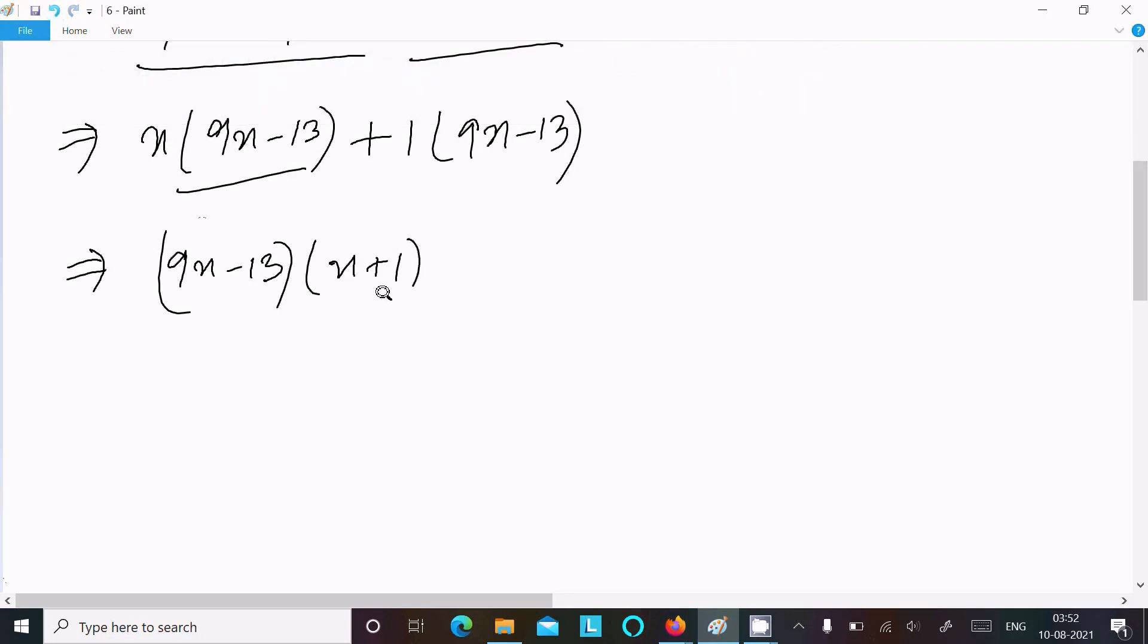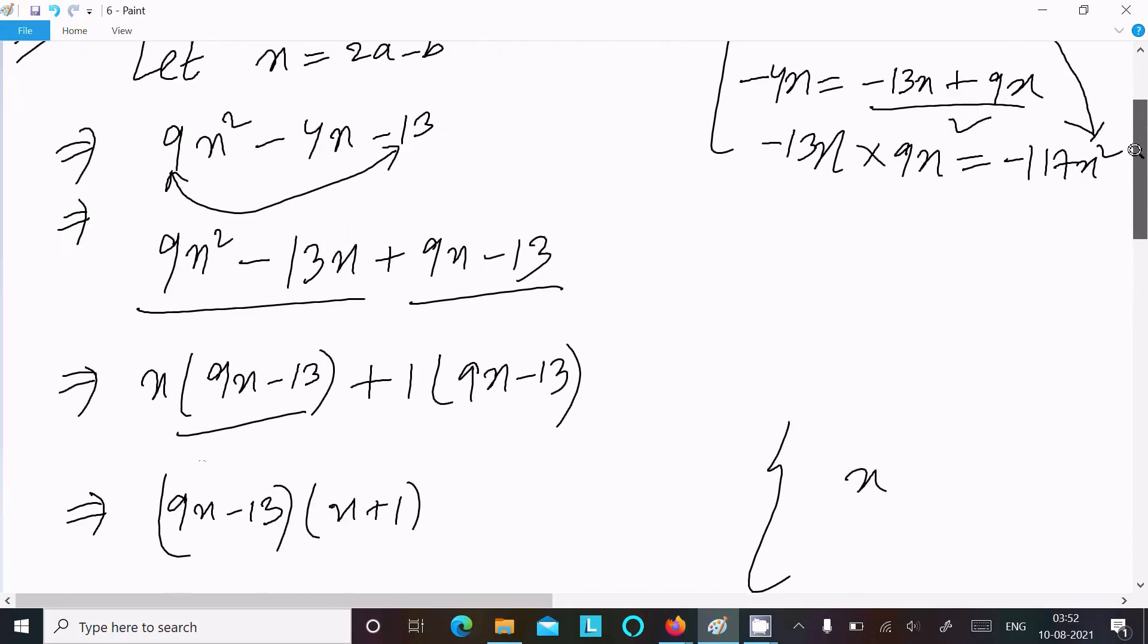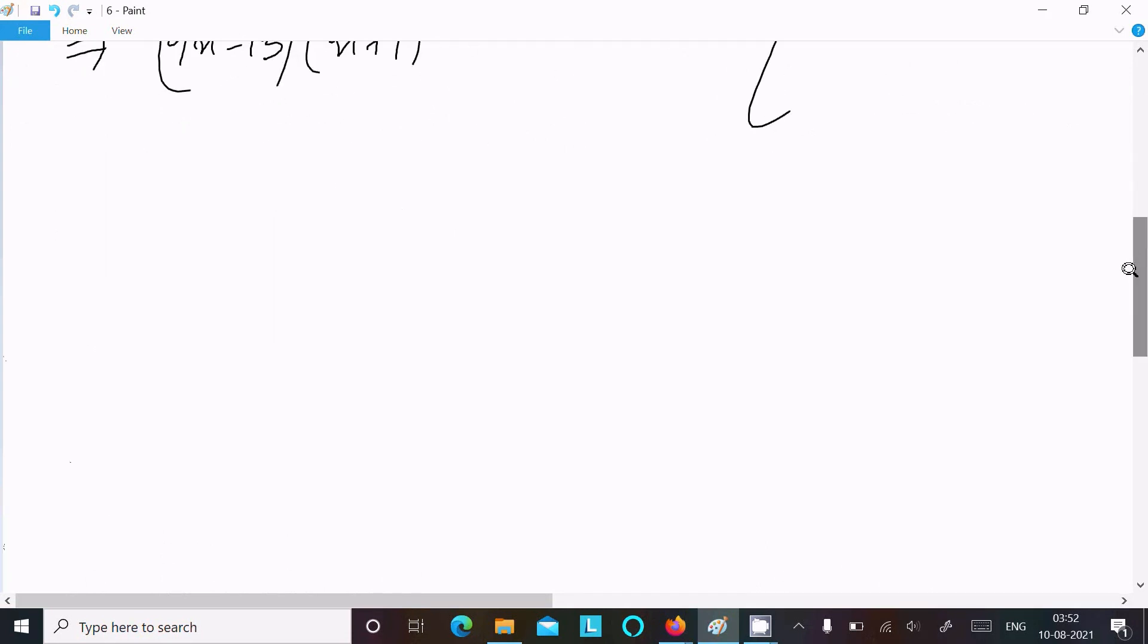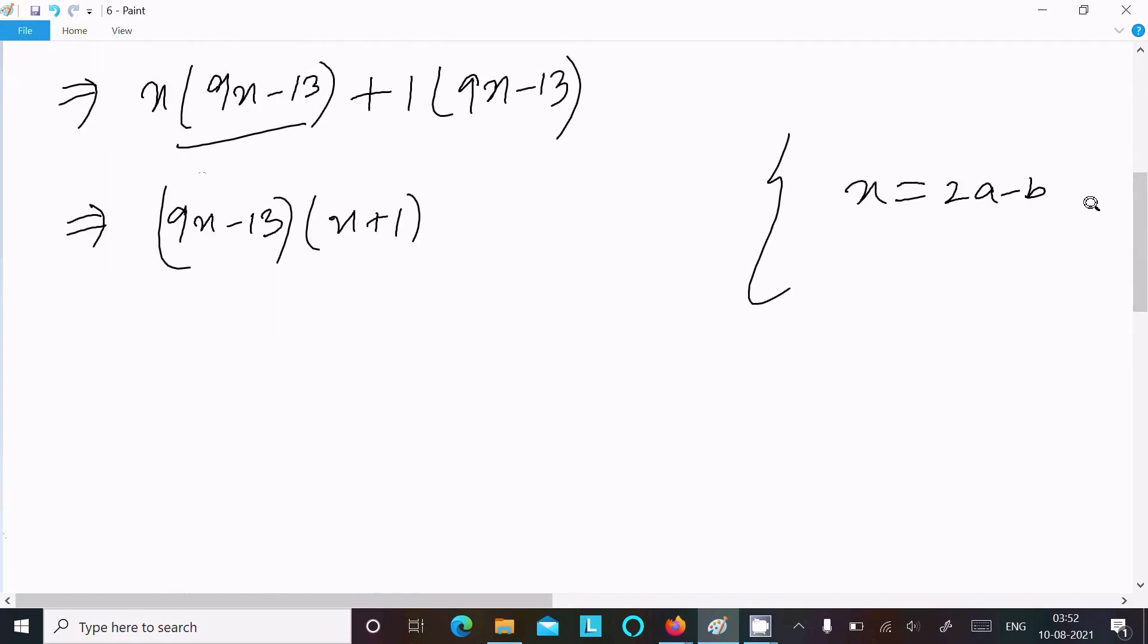After that, here x that I assumed is 2a - b. So writing in curly brackets: 9, in place of x we can write (2a - b) - 13, the next is (2a - b) + 1.